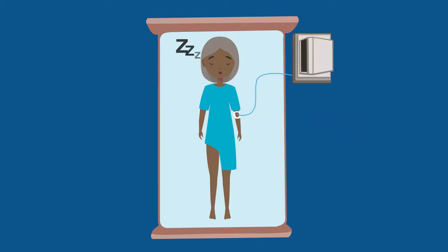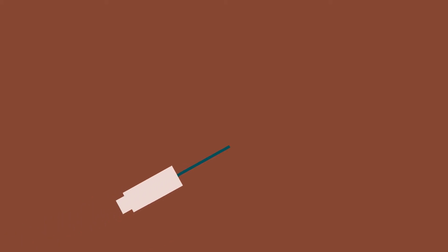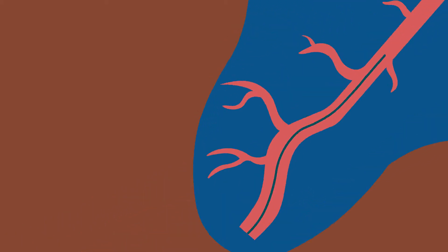While under general anesthesia or sedation, a catheter is inserted through a small incision in the leg and guides the artificial valve to your heart.